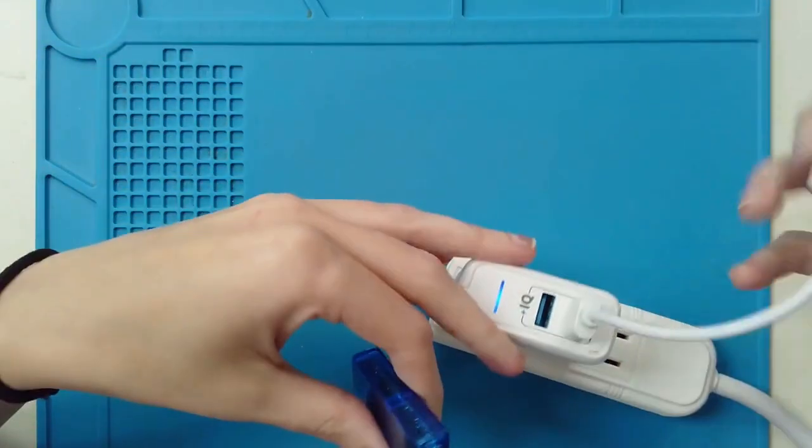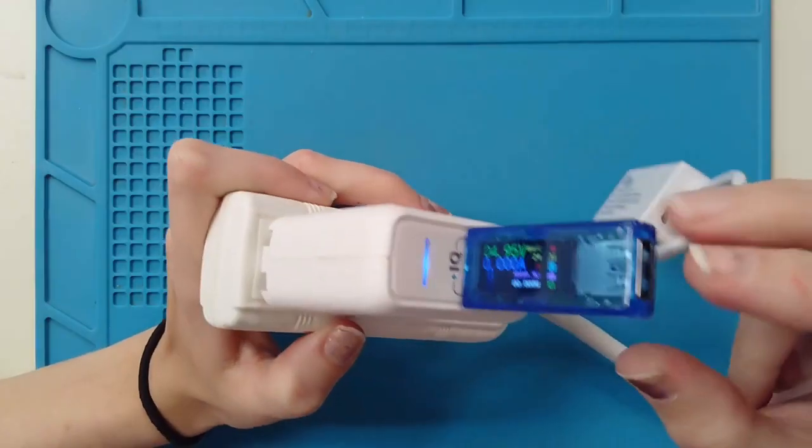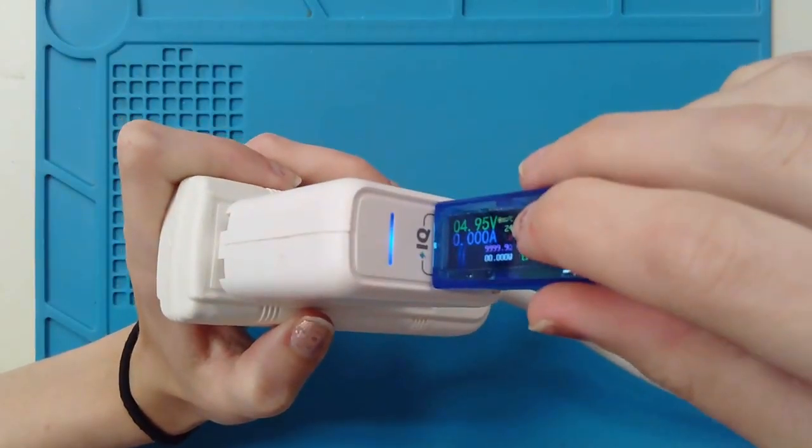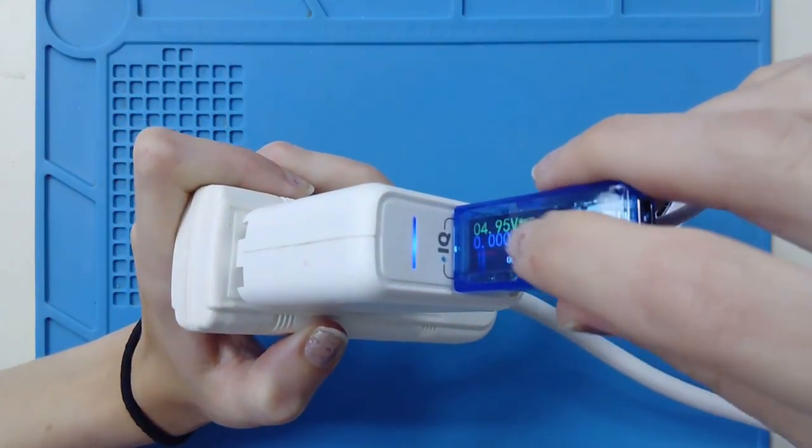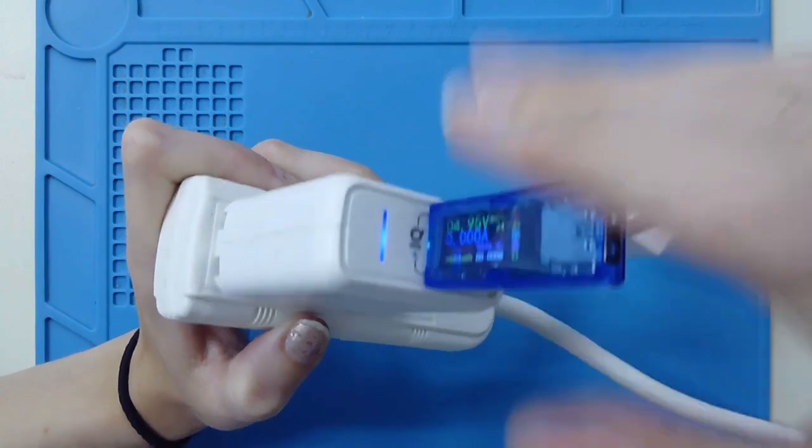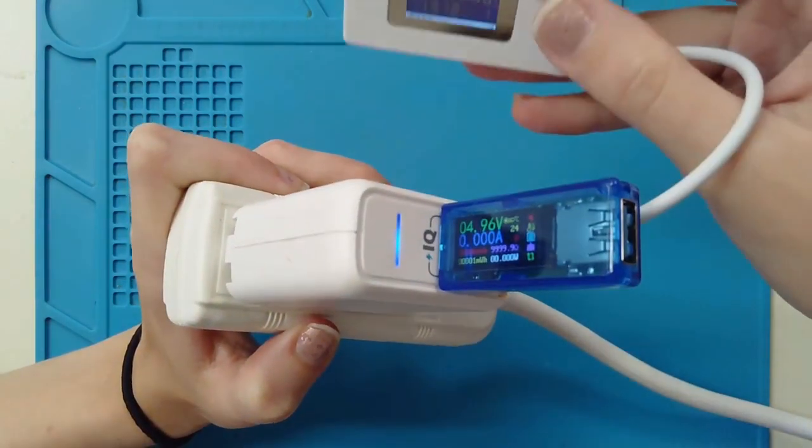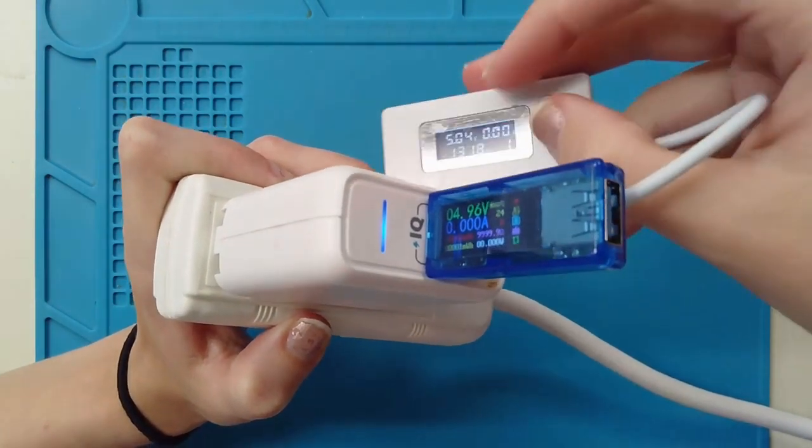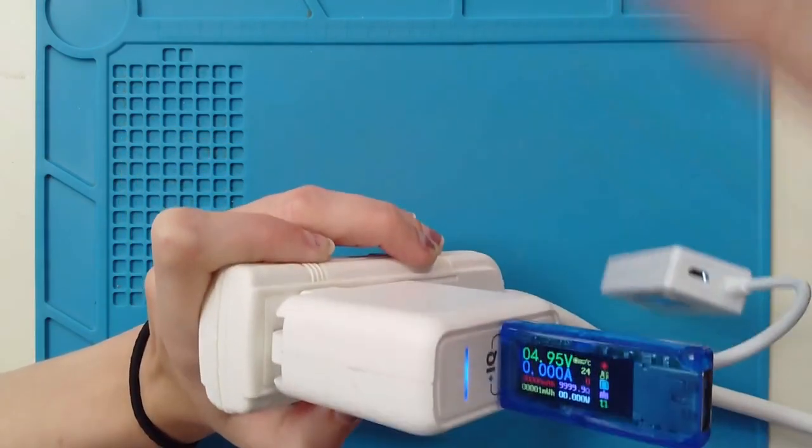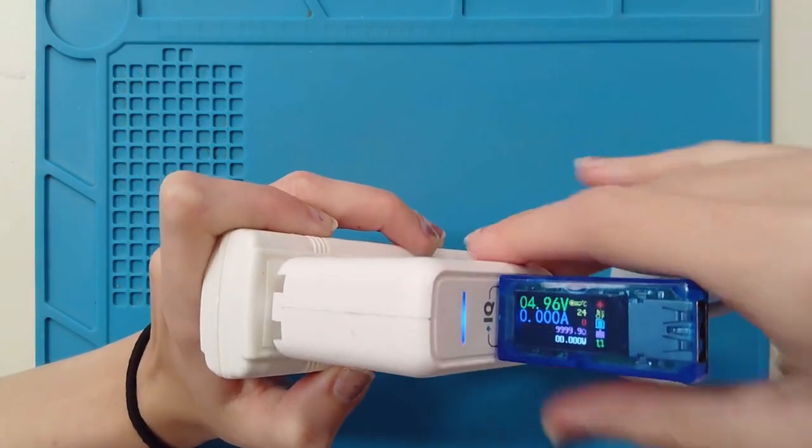So this one right here is very similar. It's going to be a little bit different orientation on here. The top is going to be the voltage. You can see the volts are 4.95 volts. That's okay. You're going to have a little bit of a difference from one to the other. It's typically just going to be within a few points. It's not that big of a deal.